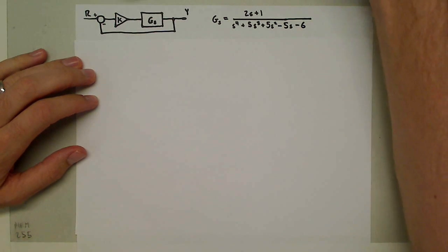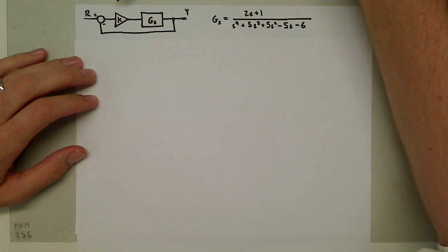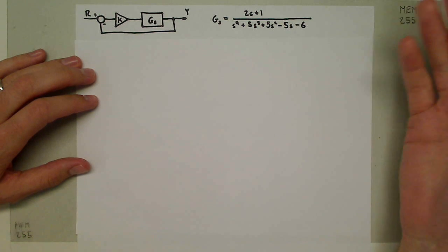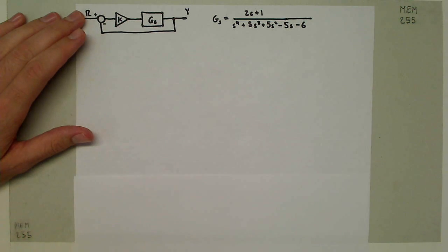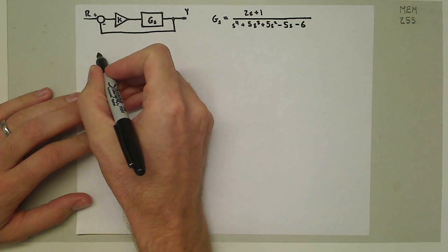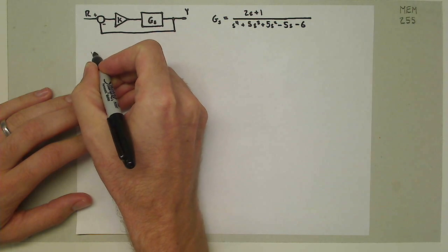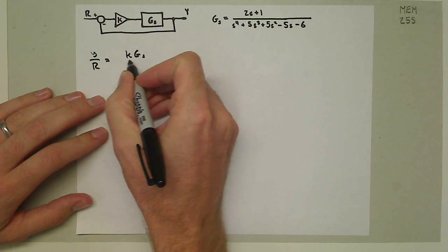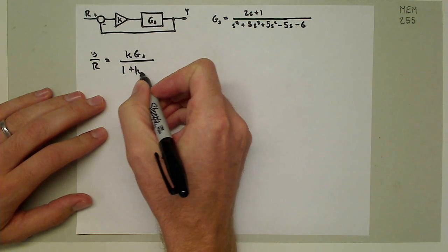I'm going to need to solve for the new transfer function. The new transfer function is going to be the combined transfer function KG over 1 plus KG, and then I'm going to solve for the poles of that new transfer function. The new transfer function, Y over R, is going to be equal to KG_s over 1 plus KG_s.